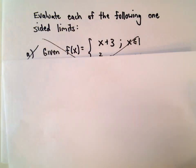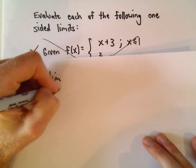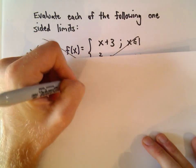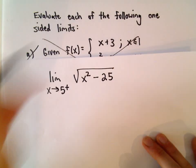So again, we're looking at the limit as x approaches 5 from the right, the square root of x squared minus 25.